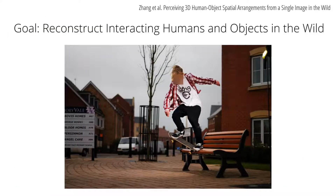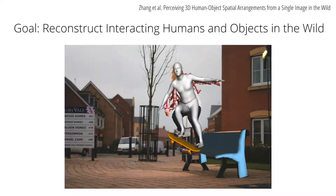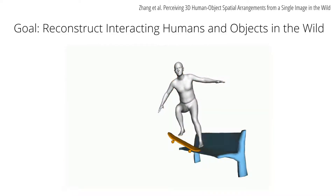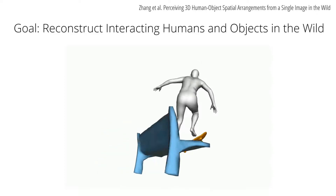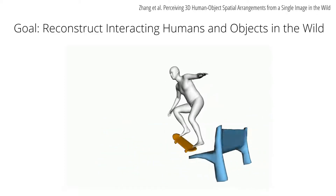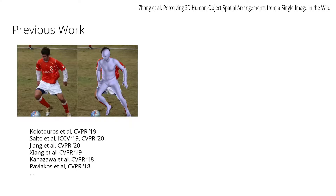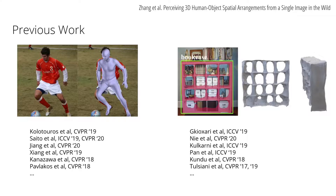In this work, from a single image captured in the wild, we recover plausible 3D spatial arrangements of humans and objects. While there has been significant progress in reconstructing humans and objects, these approaches perform these reconstructions in isolation. In this paper, we consider humans and objects jointly.